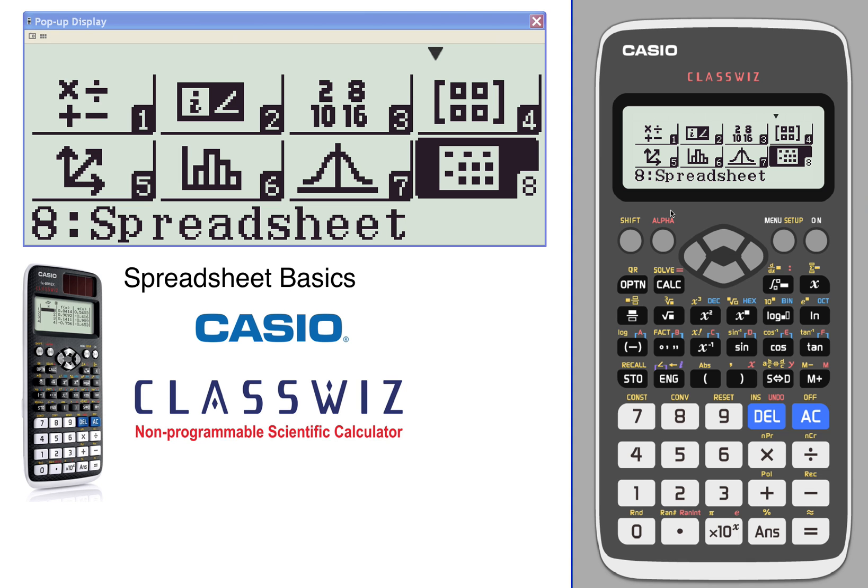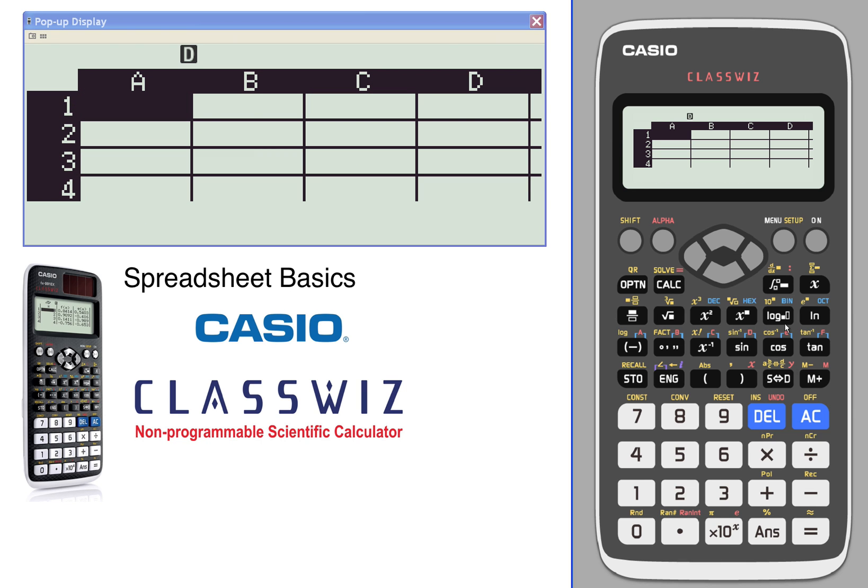Spreadsheet basics: you can toggle down to number eight or press the number eight to enter your spreadsheets. You'll notice the spreadsheet looks like your normal everyday spreadsheet. It has columns A through E and rows all the way down to 45.